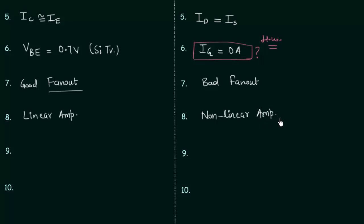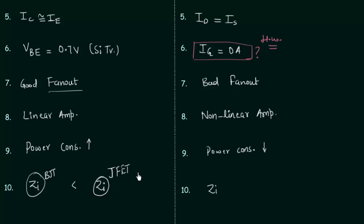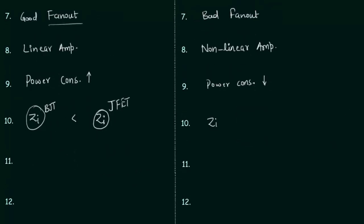The power consumption in case of BJT is higher compared to the power consumption of JFET. If we talk about input impedance ZI, the input impedance of BJT is lower than the input impedance of the junction field effect transistor.